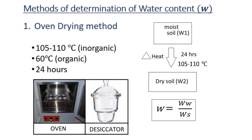The oven drying method covers a temperature range and takes 24 hours. We wait for the sample. The oven completely dries the soil, and that weight is W2.